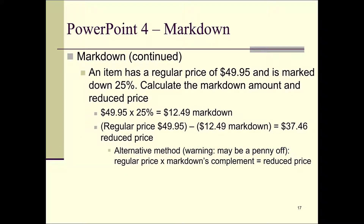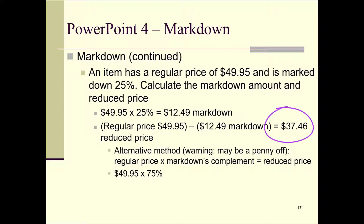In this example, what you do is take the regular price, $49.95, and multiply it by the complement of 25%, which is 75%. When you do that, you get the new reduced price of $37.46.